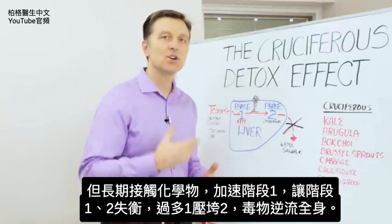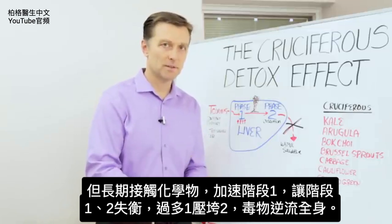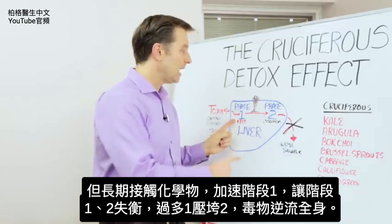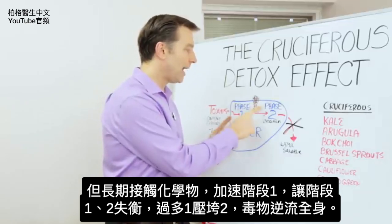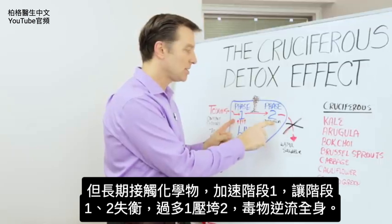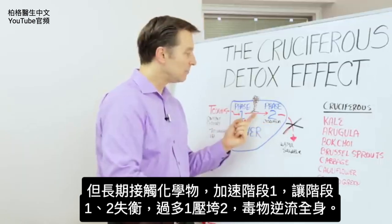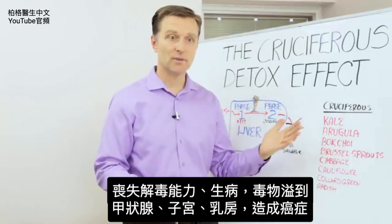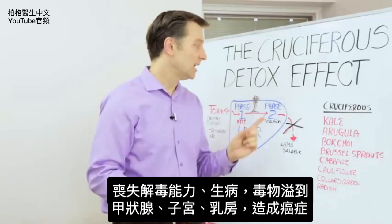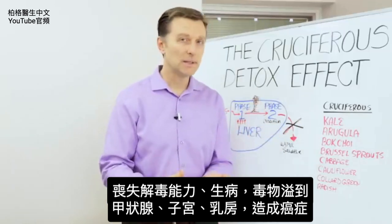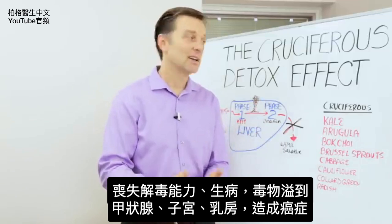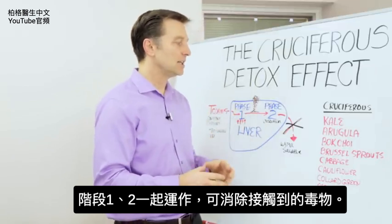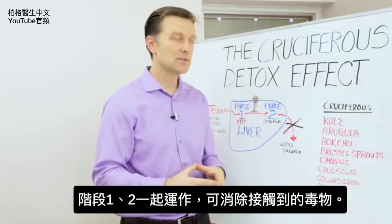But the problem is chronic exposure to these chemicals causes the speeding up of phase one. When you don't balance these and phase one goes too fast, phase two gets overwhelmed and you get a backup of toxins throughout the body, so you can no longer detoxify. You actually get sick, and these toxins can spill off into the thyroid, into the uterus, into the breasts, and cause cancer. So if these phases were working together, you could actually get rid of a lot of the poisons you're exposed to.